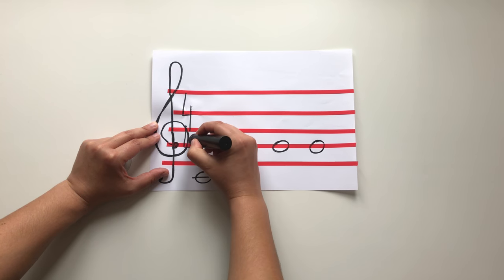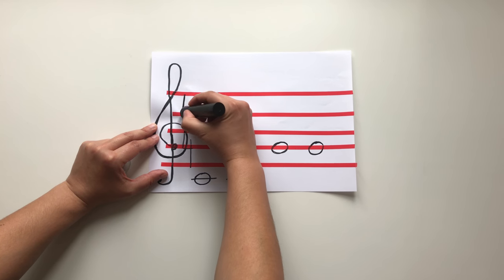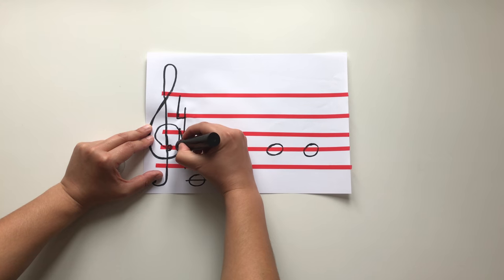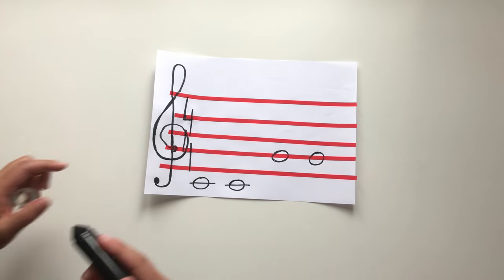Remember to add time signatures. That's going to be 4/4, which means 4 crotchet beats in one bar.